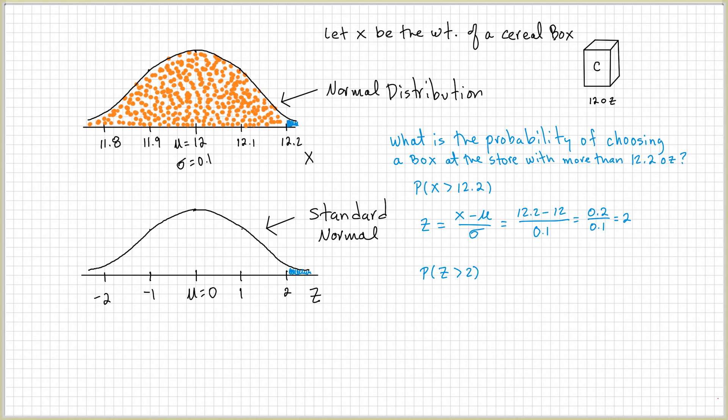Because these orange dots are measurements of the content of the cereal boxes. And you can see that on average, most likely you're going to get something that's close to 12 ounces. Because there's a lot of dots. Over here, in this blue area, there's not many dots. So, you're expecting the probability to be smaller.